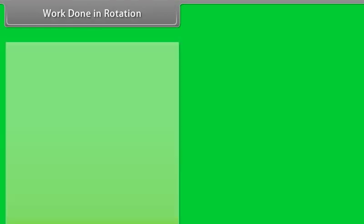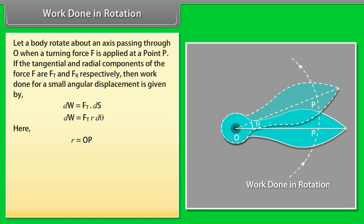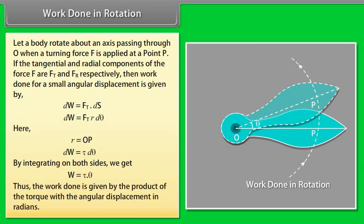For work done in rotation: let a body rotate about an axis through O when a turning force F is applied at point P, with tangential and radial components Ft and Fr. Work done for a small angular displacement is dW = Ft * R * dθ. Replacing in terms of torque, dW = τ * dθ. Integrating both sides, total work done = τ * θ. Thus work done equals the product of torque and angular displacement in radians.